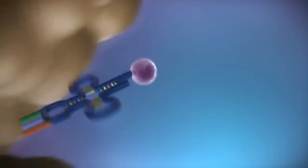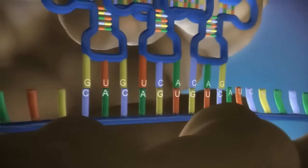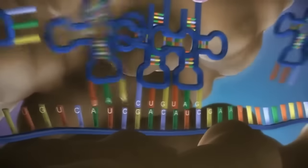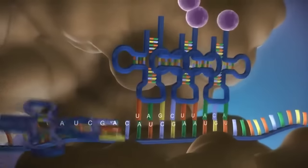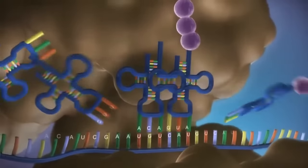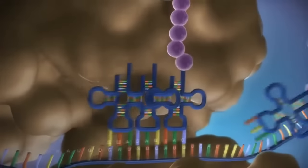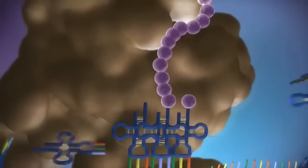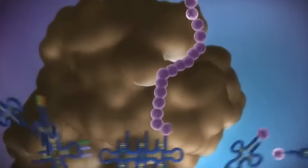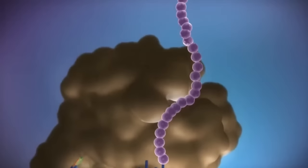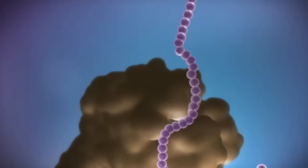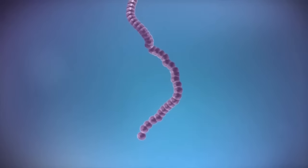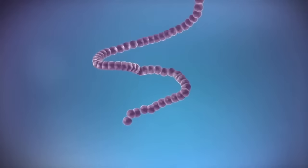The messenger RNA is read three bases at a time. As each triplet is read, a transfer RNA delivers the corresponding amino acid. This is added to a growing chain of amino acids. Once the last amino acid has been added, the chain folds into a complex 3D shape to form the protein.